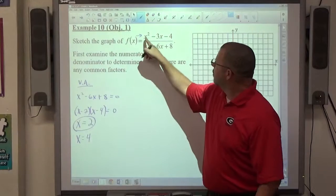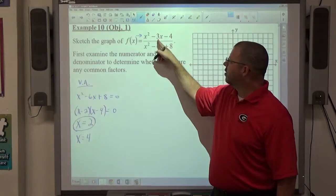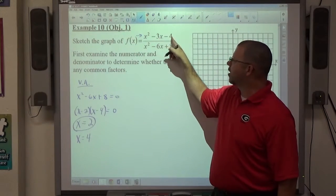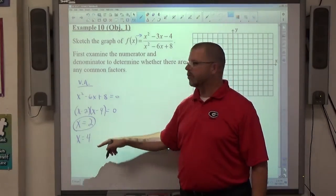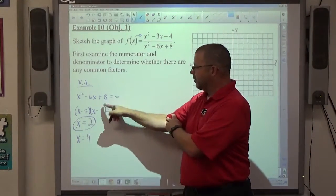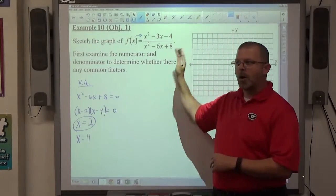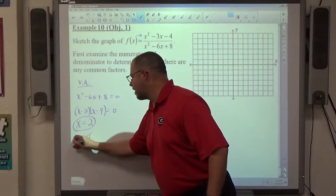If I try 4 up in the top, 4² is 16, minus 3 times 4, which is 12, is 4. 4 minus 4 is 0. This makes the top equal to 0. It also makes the bottom equal to 0. So we've already established the bottom equals 0 with this number. We see the top also equals 0 with this number. That means it's not a vertical asymptote.